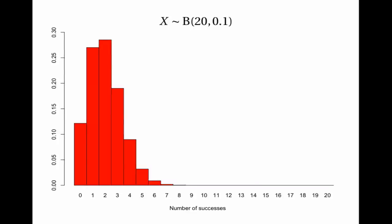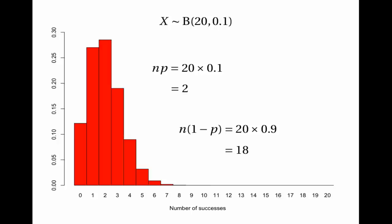What about 20 trials with p=0.1? Here np is 20 times 0.1 which is only 2, and n(1-p) is 20 times 0.9 which is 18. The value of 2 is too small — it reflects the fact that the histogram is butting up against 0, making the distribution positively skewed rather than symmetrical. If we try to superimpose a normal distribution it doesn't work: the area under the curve at x=0 and x=1 is much smaller than the bars, and at x=3 it's much too large. The normal approximation gives wrong probabilities here.